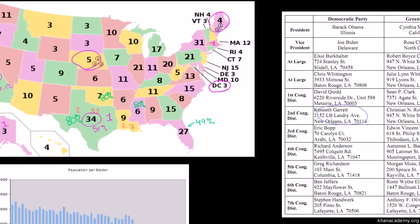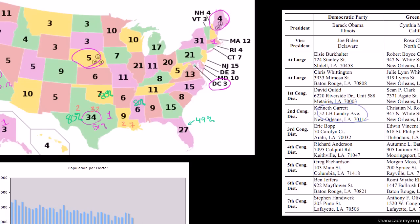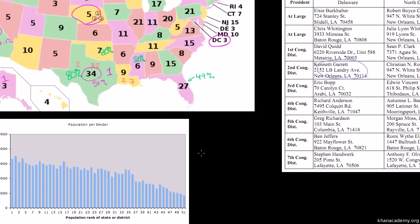Another unfairness: dividing population by the number of electors shows that larger states have each elector representing many more people. In California, each elector represents over 600,000 people. In Wyoming, each elector represents under 200,000 people. So in Wyoming, people get roughly three times the representation per capita compared to California.